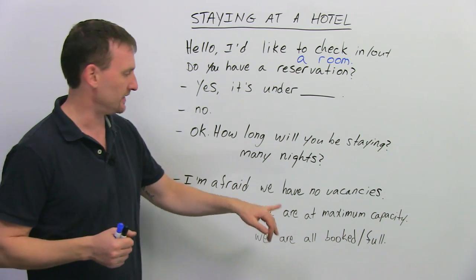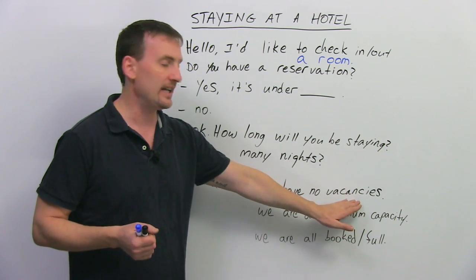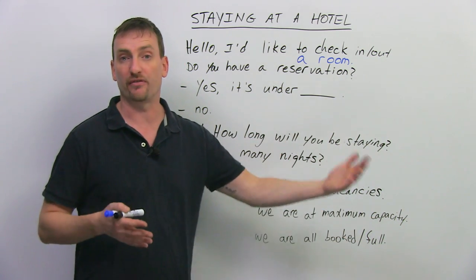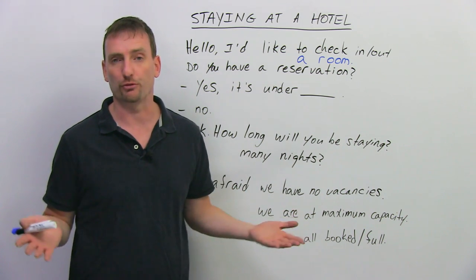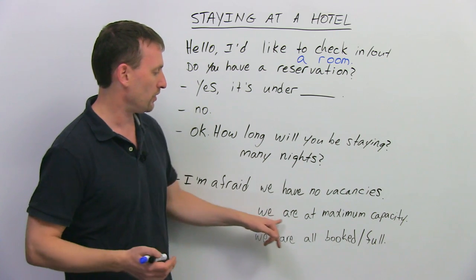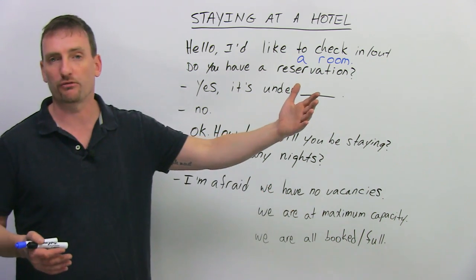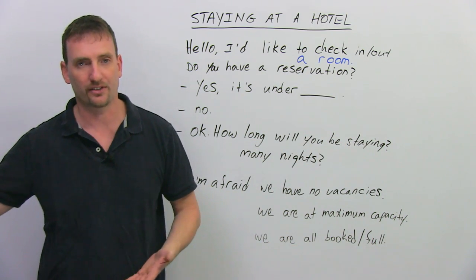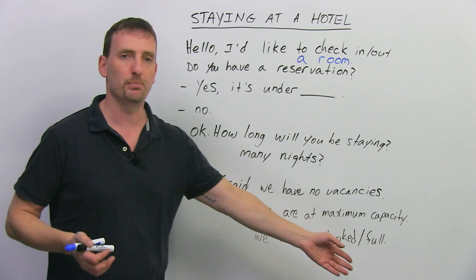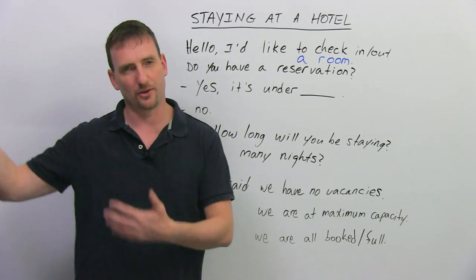But if they don't have rooms, they can say three things. We have no vacancies. Vacancy means an empty or available space. If they have no vacancies means they have no rooms, go to the next hotel. Or, I'm afraid we are at maximum capacity. It basically means all the rooms are being used, we have nothing to offer you. Go to the next hotel. We are all booked, or we are full. Basically, we have no rooms, go to the next hotel.